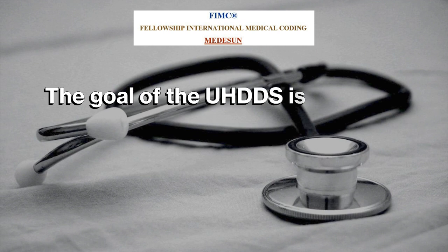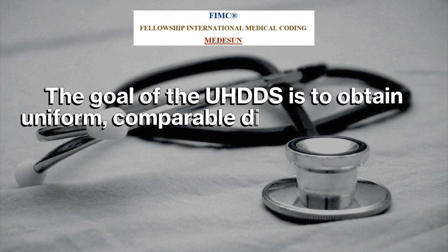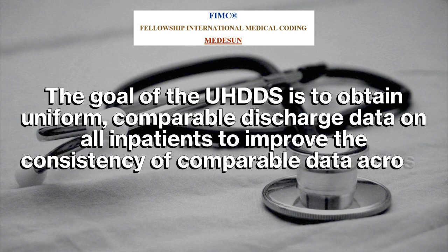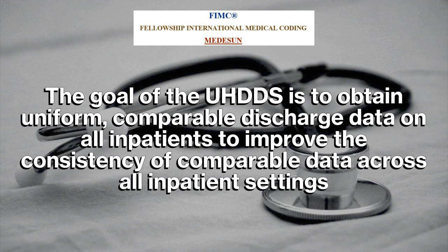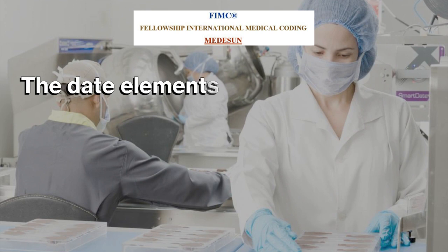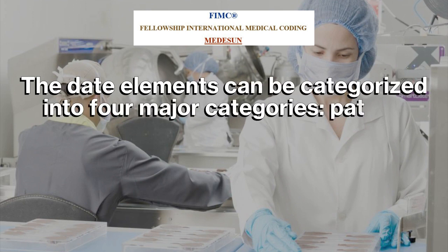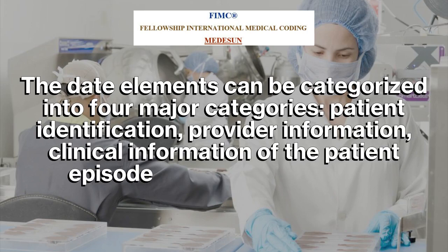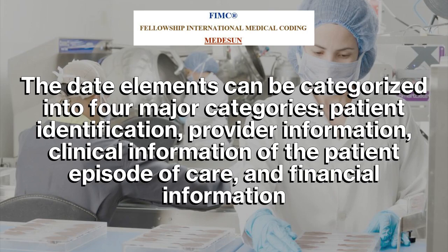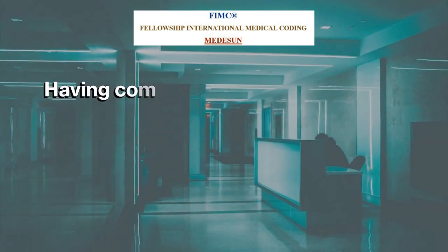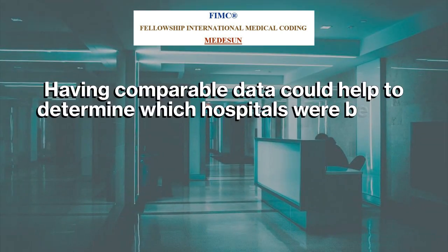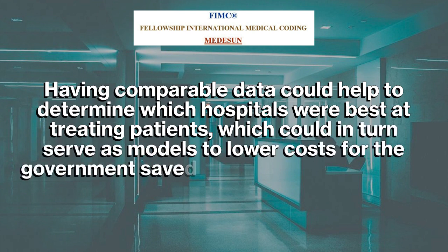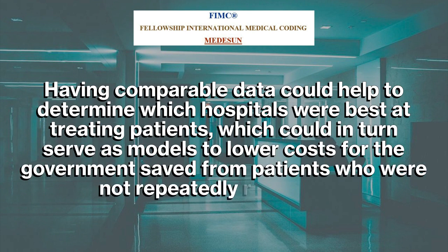The goal of the UHDDS is to obtain uniform, comparable discharge data on all inpatients, to improve the consistency of comparable data across all inpatient settings. The data elements can be categorized into four major categories: patient identification, provider information, clinical information of the patient episode of care, and financial information. Having comparable data could help to determine which hospitals were best at treating patients, which could in turn serve as models to lower costs for the government, saved from patients who were not repeatedly readmitted.